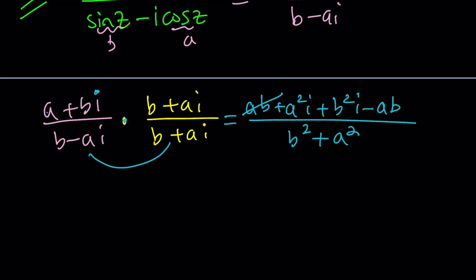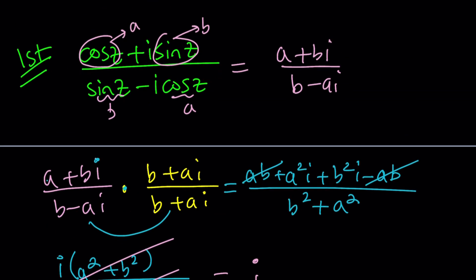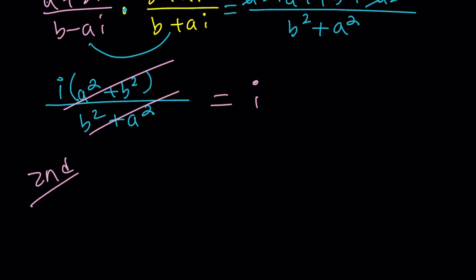Notice that AB cancels out. Then we get the following. We can take out an I: A squared plus B squared divided by B squared plus A squared. I was hoping that the first method would be a little painful, but it wasn't. A squared plus B squared cancels out, leaving us with I. Are you serious? Is that the answer? Let's look at another approach and see if we can get the same answer in a little harder way.